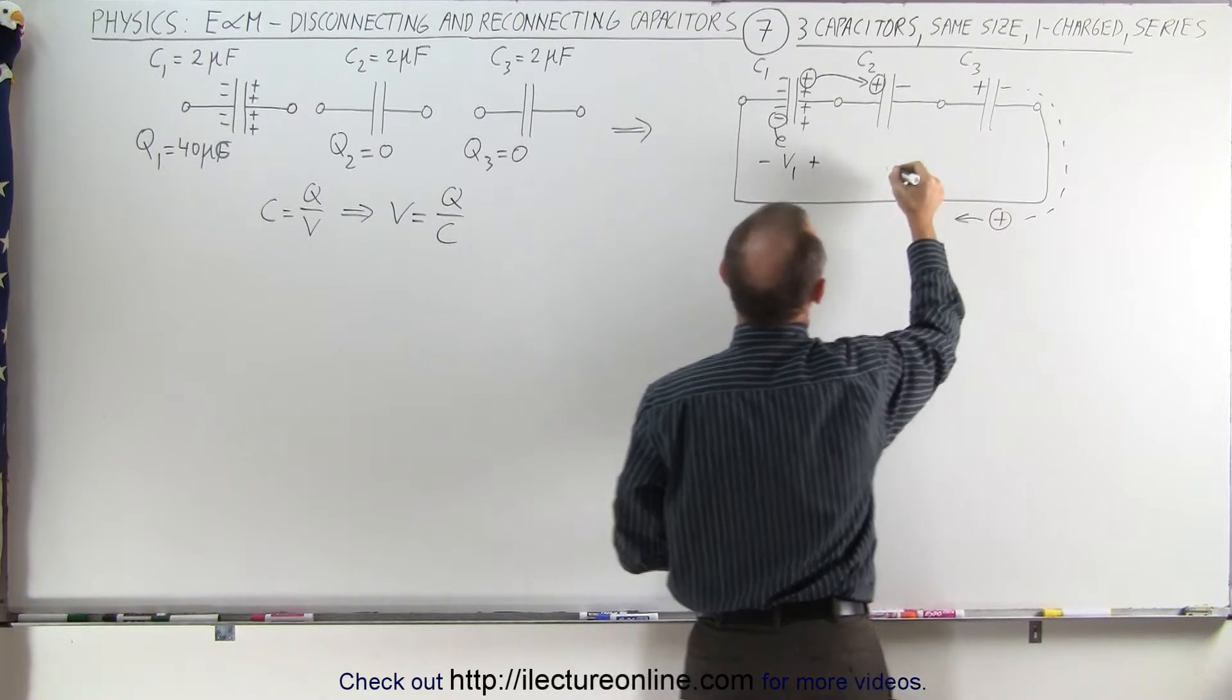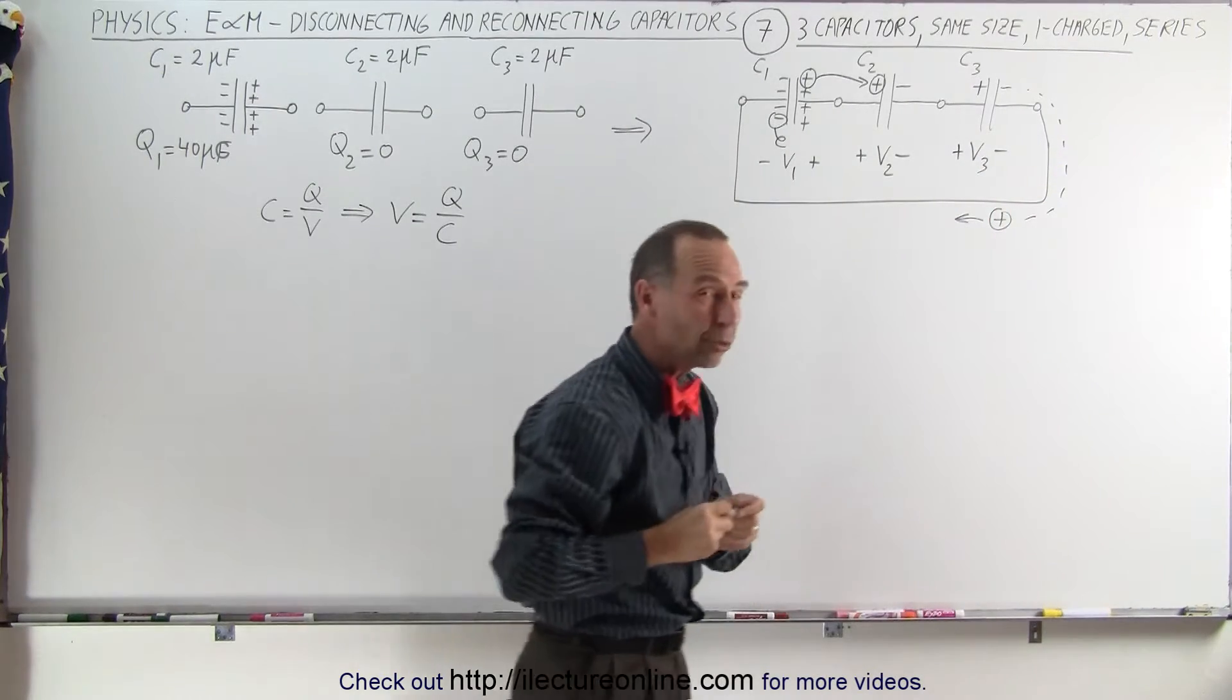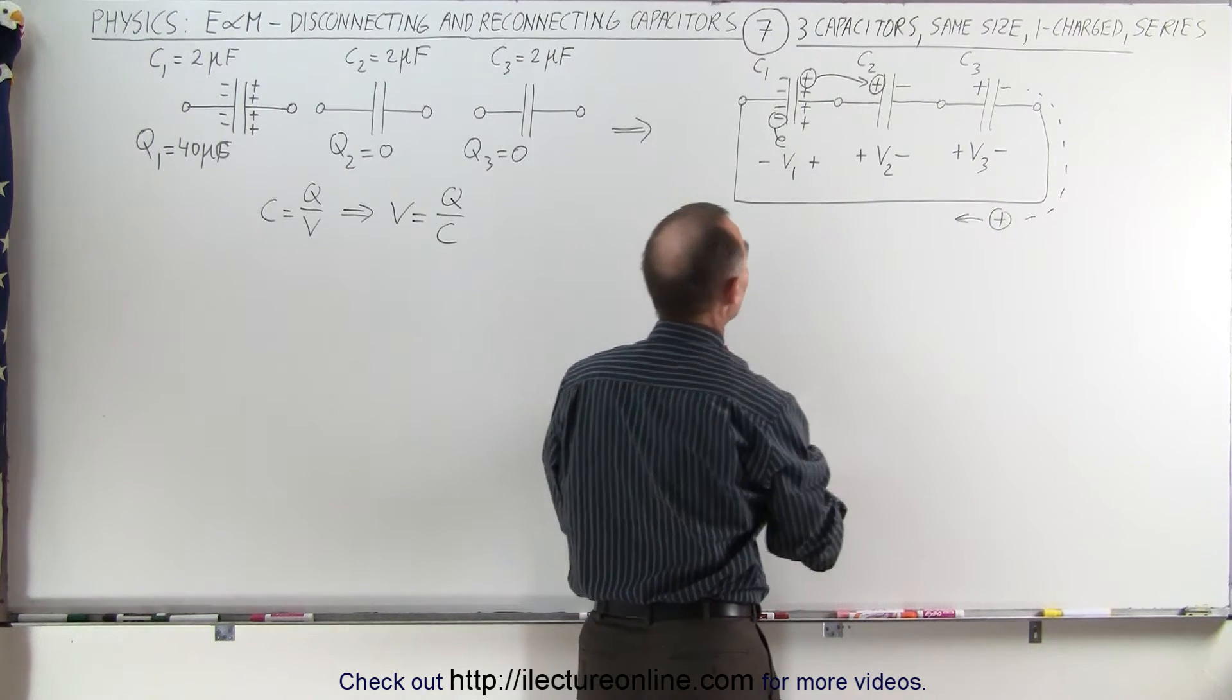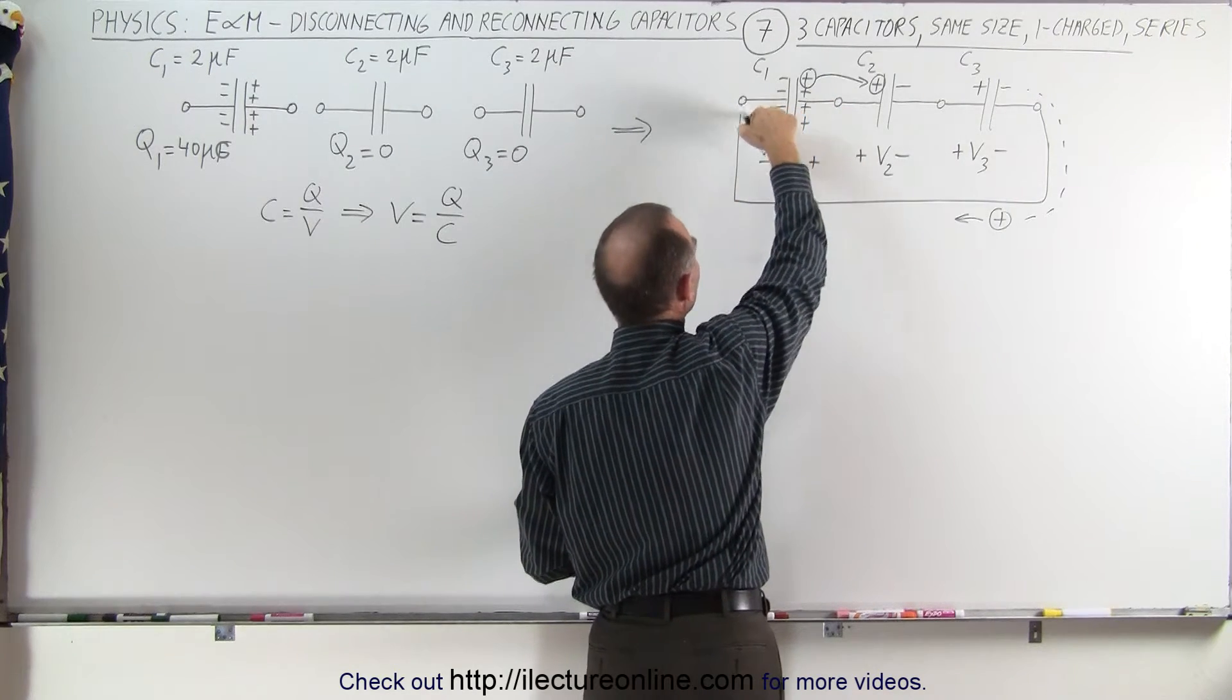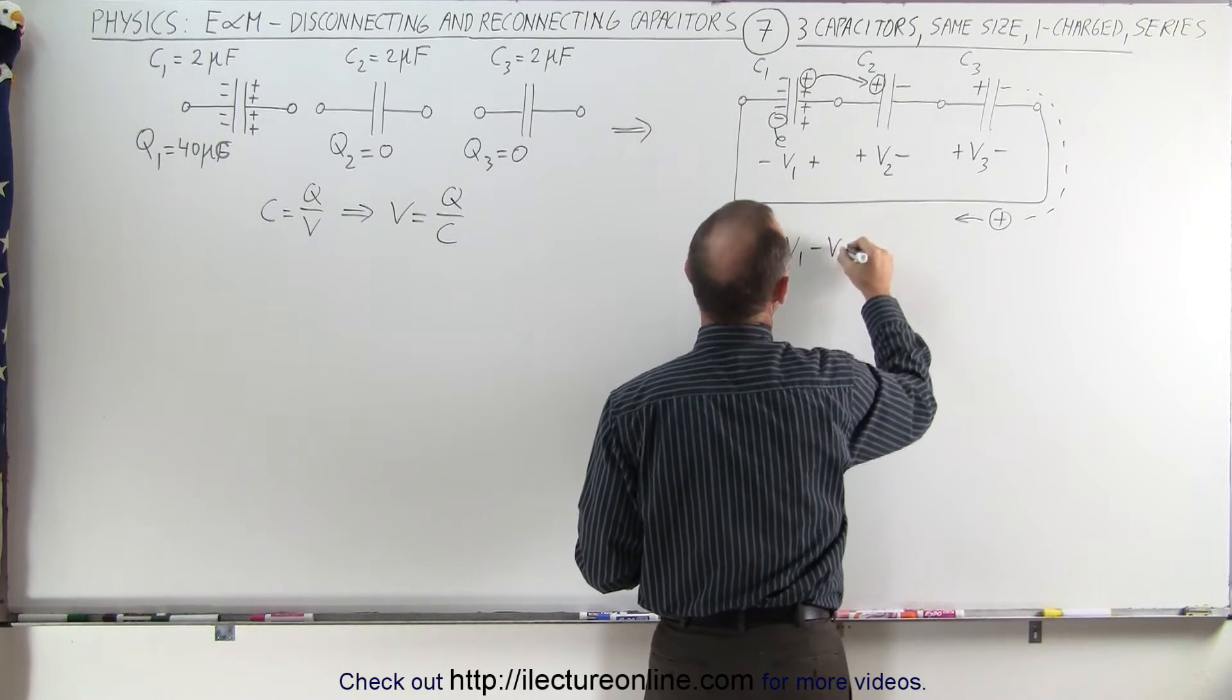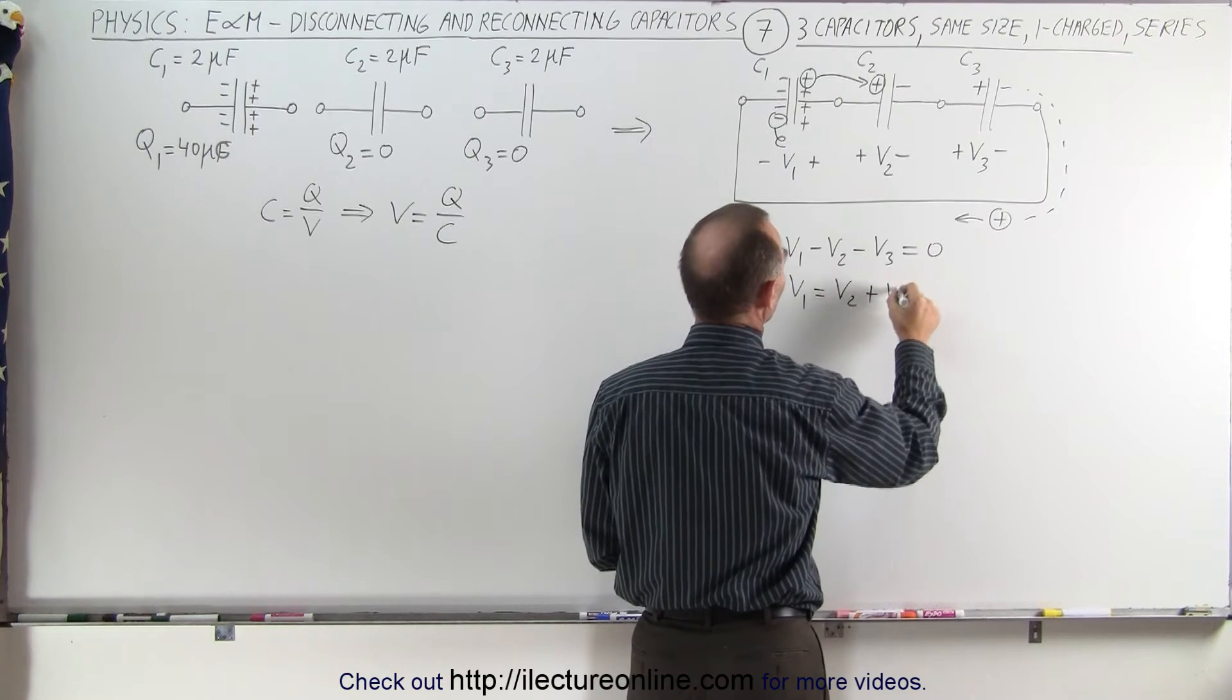This is V1, and that would be the positive end and the negative end. This is V2, that's the positive end on this side, the negative end. And V3, positive end on this side, negative end there. It's a good idea to write that down so you realize this is negative, positive, positive, negative, positive, negative. When we go around the whole circuit and add up all the voltages, we get not minus V1 because if we're moving around this way, we go from the negative to the positive. That's plus V1. V1 minus V2 minus V3 equals zero, or V1 equals V2 plus V3.